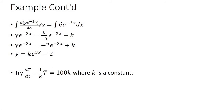Dividing K by e^(-3x) can be written as K · e^(3x) by applying the laws of indices. So the final answer is y = -2 + K·e^(3x). You can pause the video and attempt the practice problem shown.